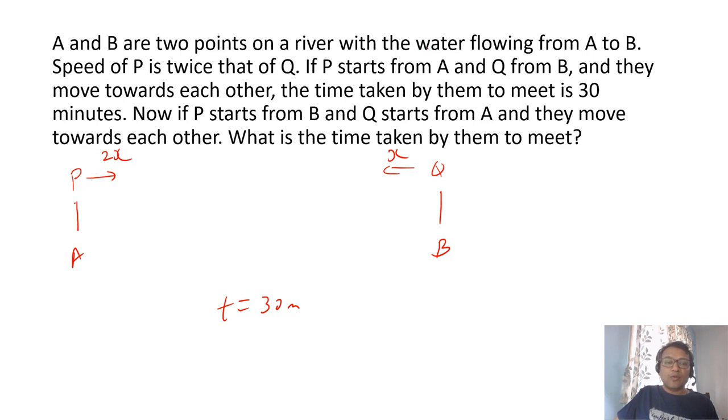Now, we don't know the speed of water flowing from A to B. Let the speed of water be s. That means the speed of P will be 2x plus s and speed of Q will be x minus s. So relative speed will be 2x plus s plus x minus s. Because they are going in opposite direction, the relative speed is addition of the speeds. Speed of P plus speed of Q which becomes 3x.